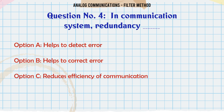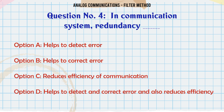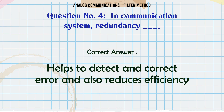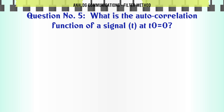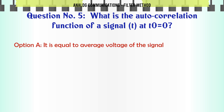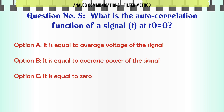In a communication system, redundancy: a) Helps to detect error. b) Helps to correct error. c) Reduces efficiency of communication. d) Helps to detect and correct error and also reduces efficiency. The correct answer is: Helps to detect and correct error and also reduces efficiency.